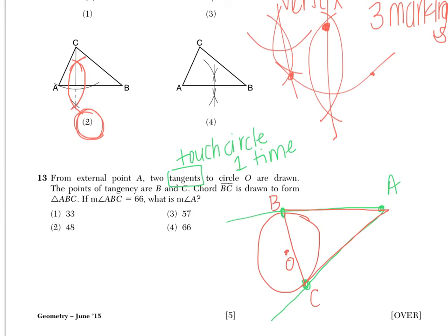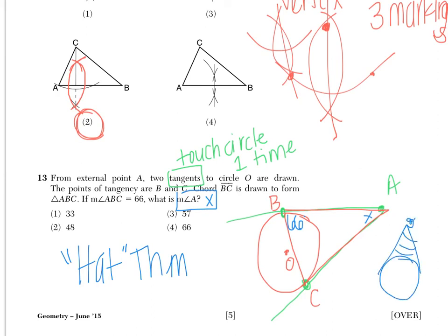If the measure of angle ABC is 66, what is the measure of angle A? So I'm going to box this in, call it X, because that's what I'm looking for. ABC is 66. Now we know that when we have two tangents drawn to a circle, we get something called the hat theorem. This is because it looks like a hat. If you were to kind of draw this picture on its side, it kind of looks like a party hat. And we know that two sides of a hat, those two tangents, must be congruent, because you wouldn't want a lopsided hat, of course.